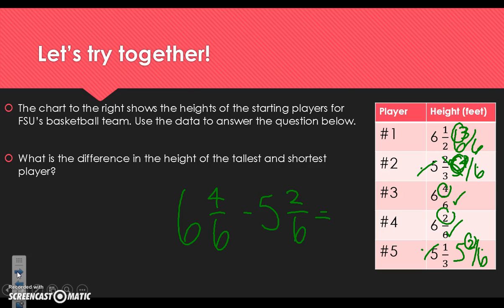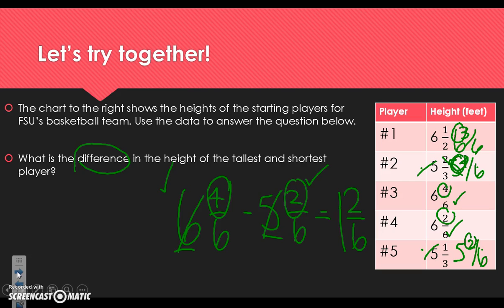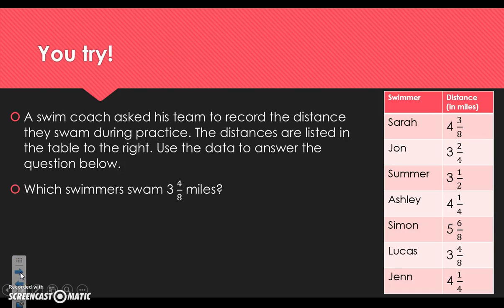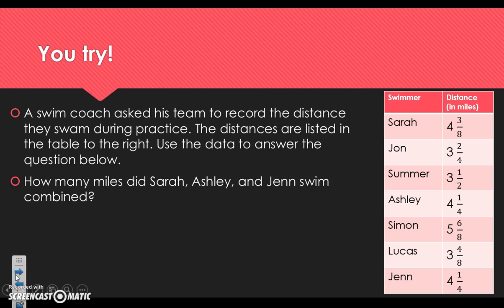We have the tallest player at 6 and 4 sixths and the shortest player at 5 and 2 sixths. We want to know the difference, so we subtract. Starting with whole numbers: 6 minus 5 is 1. The denominator stays the same, so we bring the 6 over, then 4 minus 2 is 2. The difference between the tallest and shortest player is 1 and 2 sixths. Now you're going to try answering a question about a swim team — use the chart and remember to find a common denominator. Good luck, and I'll see you tomorrow.